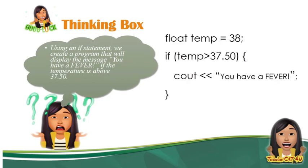This is the code for the thinking box exercise. Since 37.50 has a decimal point, the data type we'll use can be double or float. So: float temp is equal to 38 — the value of temp is 38. If temp is greater than 37.50, therefore it will display 'You have a fever.'